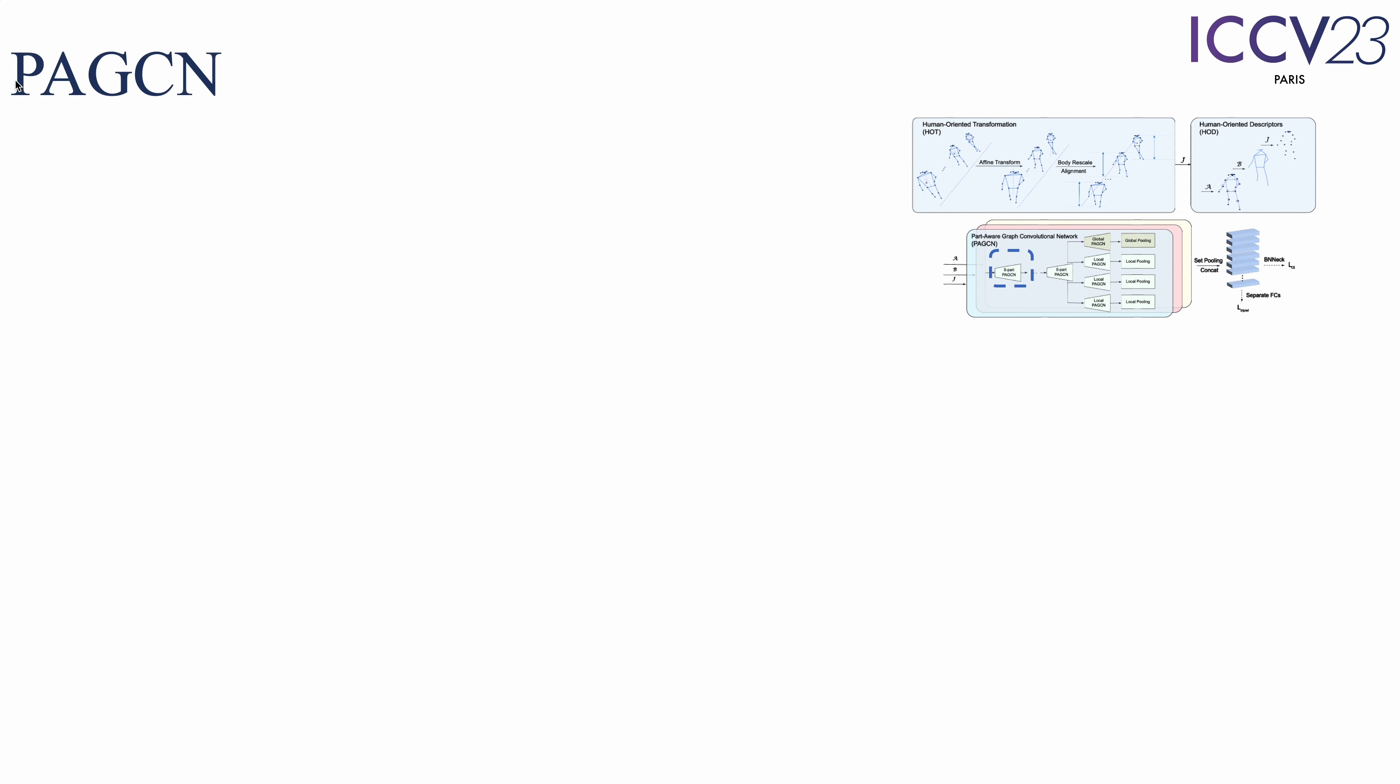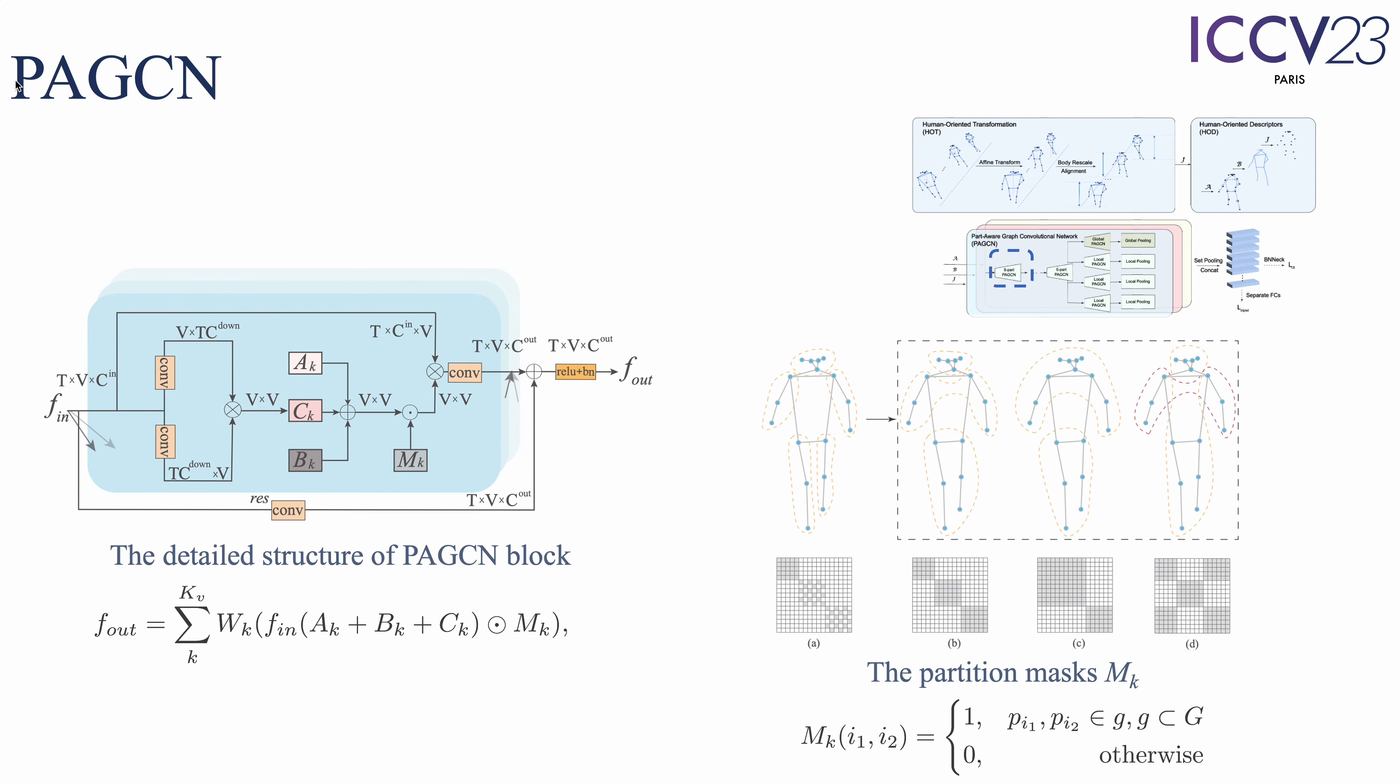Furthermore, we present PAGCN to achieve efficient graph partition and local-global feature relation extraction under the unified pose representation. With different part-specific masks and a well-designed network structure, the method can not only capture fine-grained features and distinct local relations but also reduce the amount of calculations and the number of parameters required.